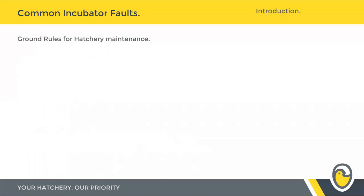A couple of ground rules going into general maintenance on any incubators. These are best practices for any hatchery in the world, but you have to adhere to any local laws and ordinances as well. Maintenance is largely split between two main categories: preventative maintenance — things like swapping out belts before they snap, keeping on top of corrosion, and swapping out relays before the end of their natural life — and then reactive maintenance, which is what we're going to spend most of today on.